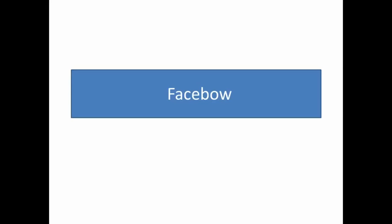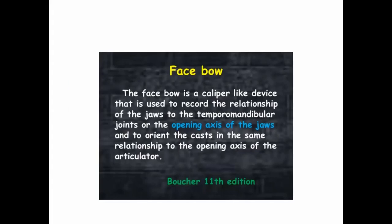Hello friends, today my topic in prosthodontics is on the facebow. Facebow is a vital tool in determining the inclination of the maxilla, orientation of the maxilla towards the plane located by two condylar rods on the posterior as the posterior reference points and the infraorbital foramen as the anterior reference point, and transferring this same relationship to the articulator.